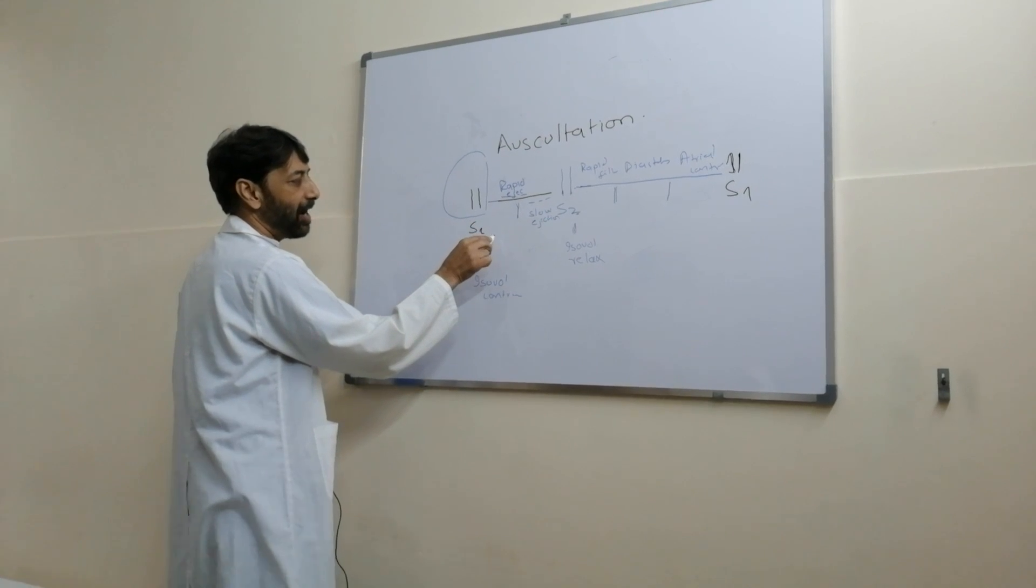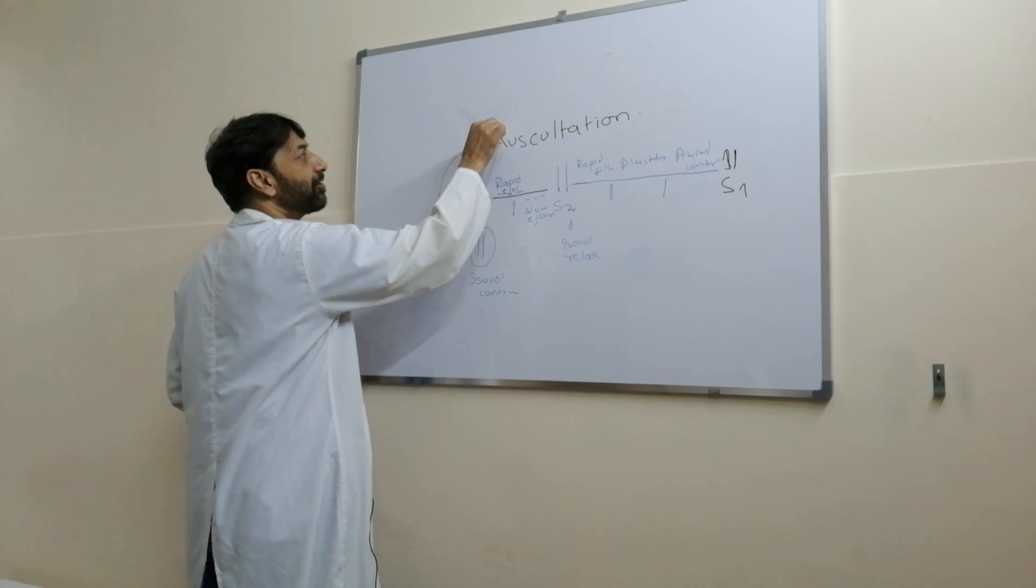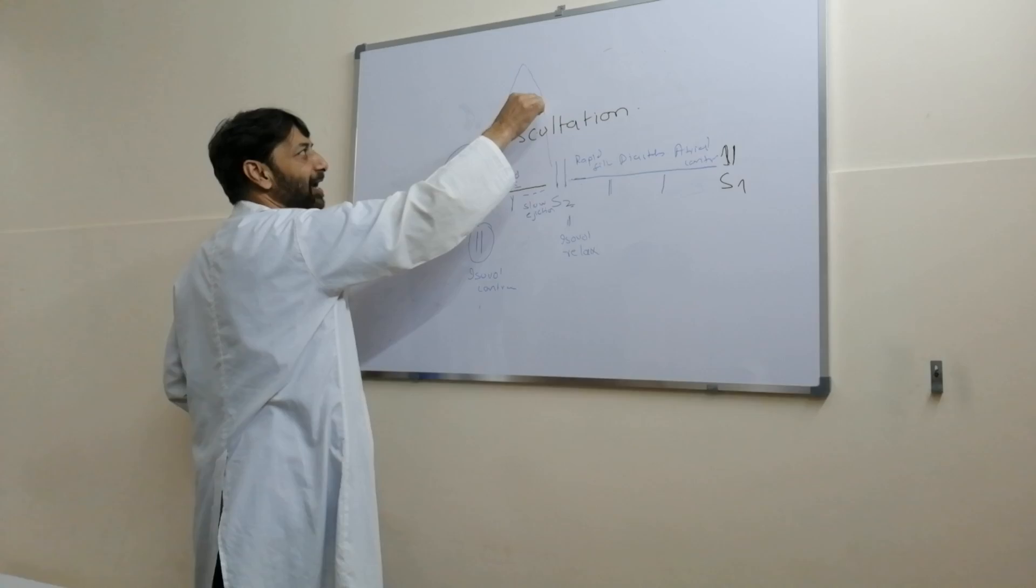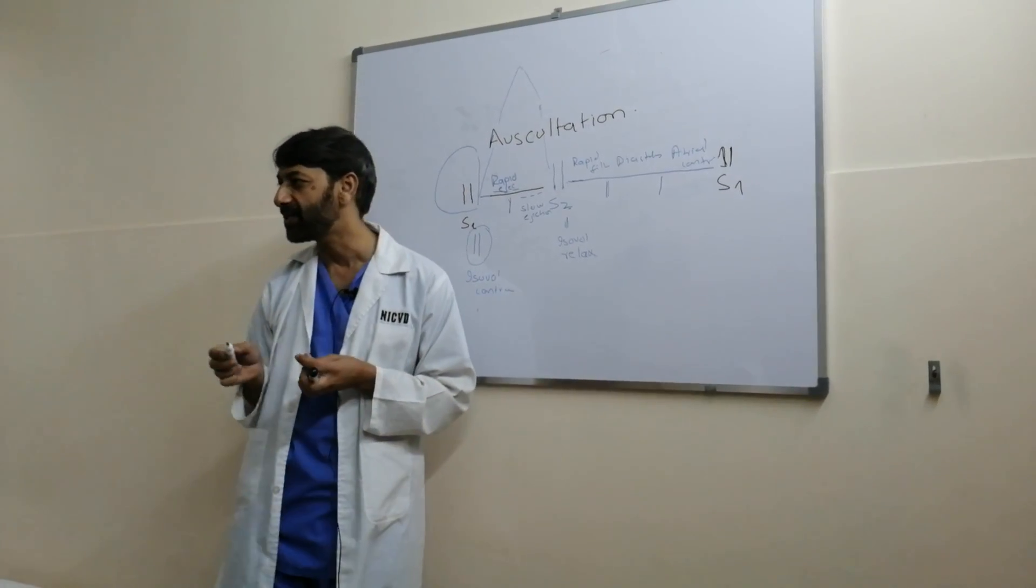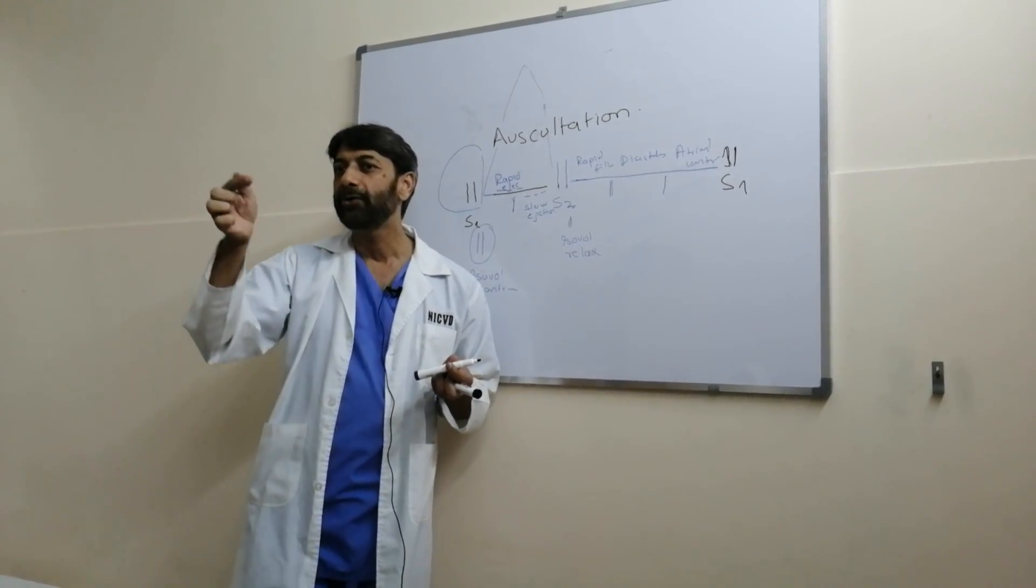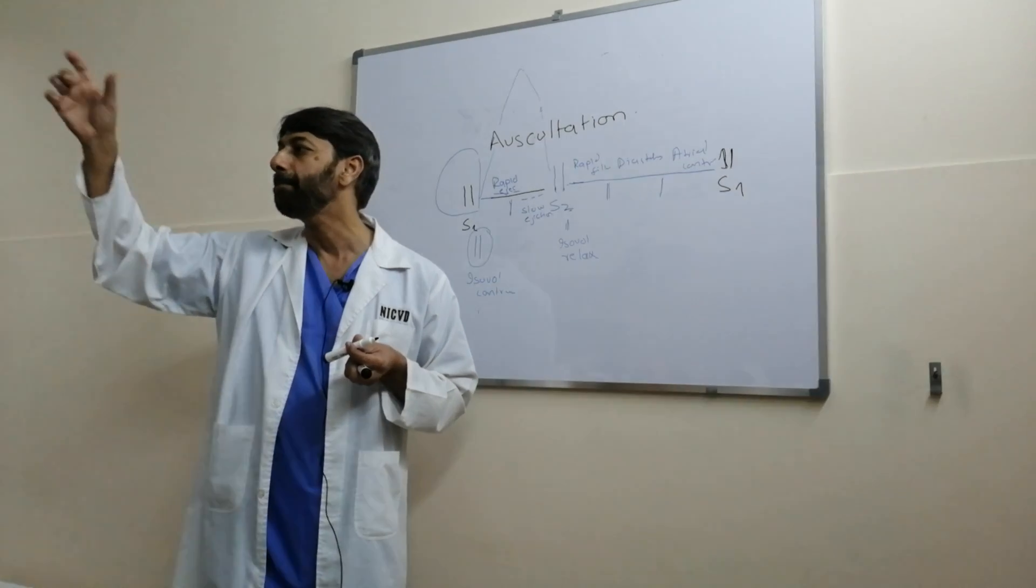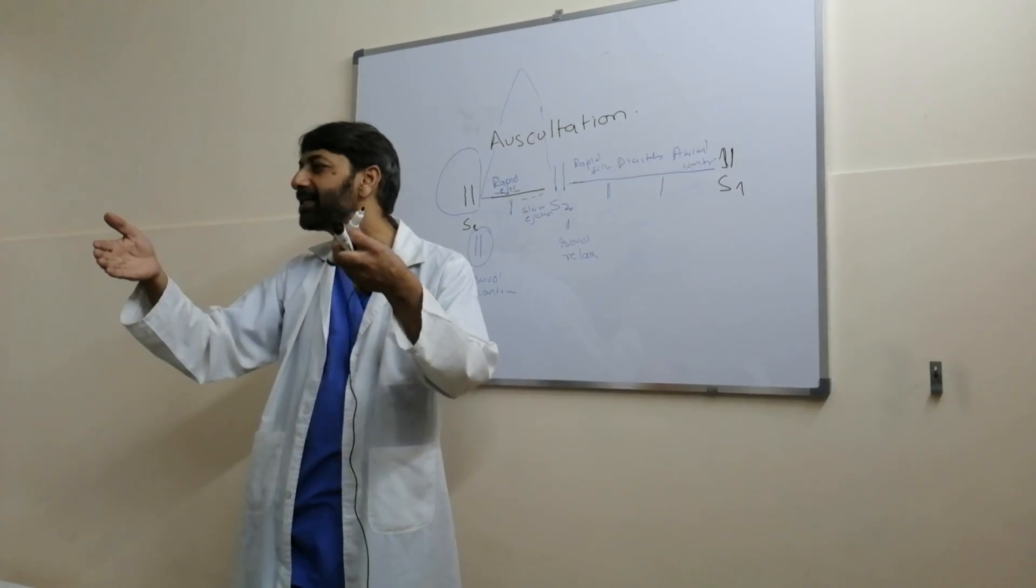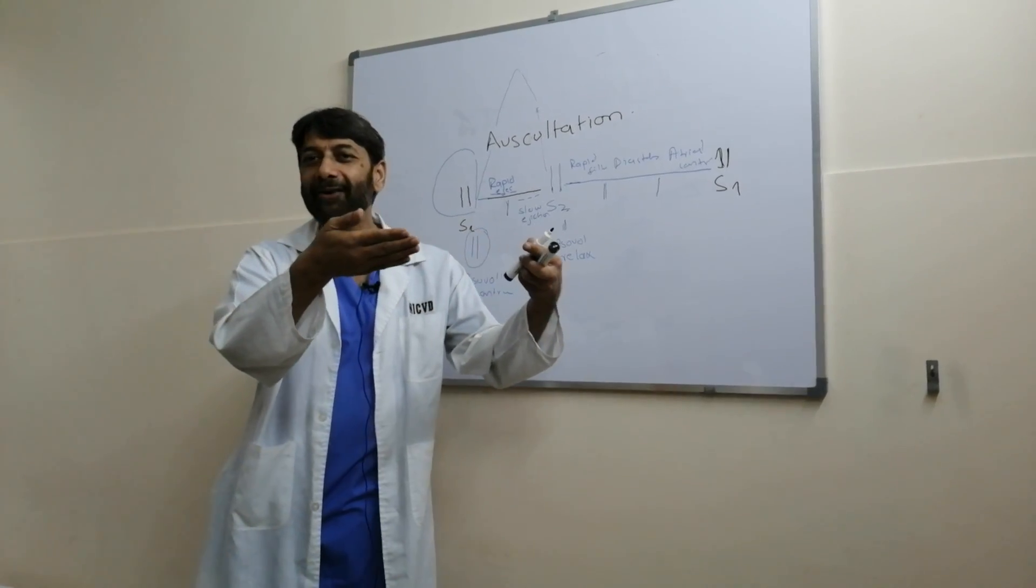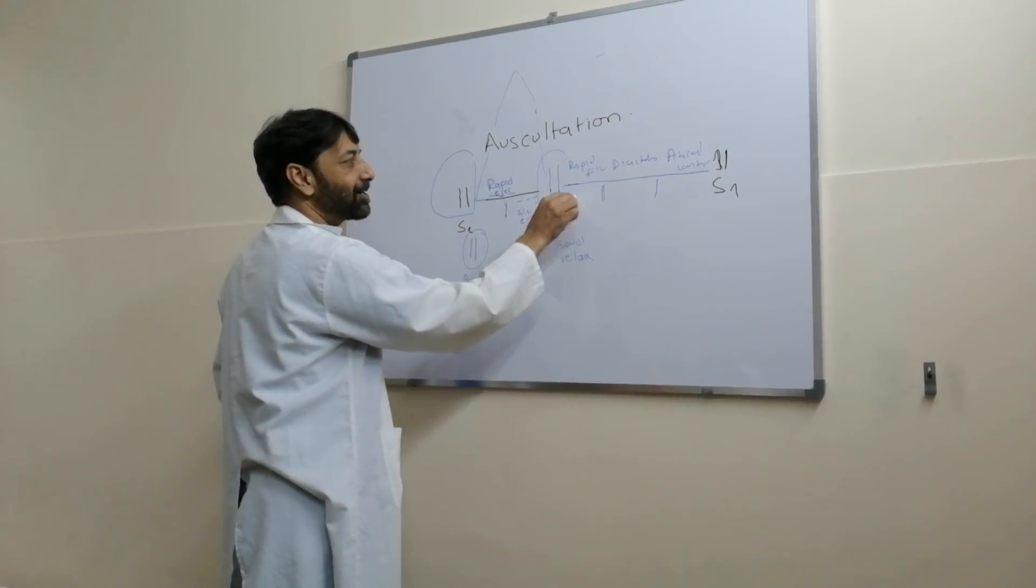After isovolumic contraction, you're going to have rapid ejection phase. Then you have slow ejection phase. And in this slow ejection phase, a point came where your LV pressure reduces from aorta, or your RV pressure reduces from pulmonary arteries. That's the time when your pulmonary and aortic valve close. This is the point of second heart sound.